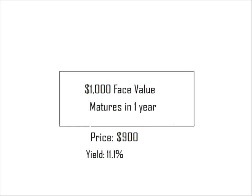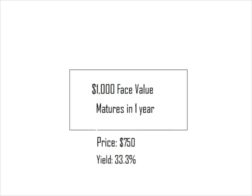Here we see the bond and the price someone is willing to pay for it. If someone is willing to pay $900 today for the promise of $1,000 from Eric in one year, we use the formula to calculate the yield and it comes out to 11.1% — that's the nominal rate of return the investor expects and the nominal cost of borrowing for Eric. Now if no one is willing to pay $900 and the most Eric can get is $750, the yield is 33.3%, a much higher return for the investor. So as the price fell, the yield on the bond rose.